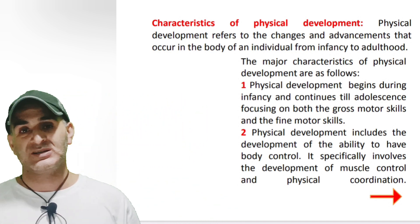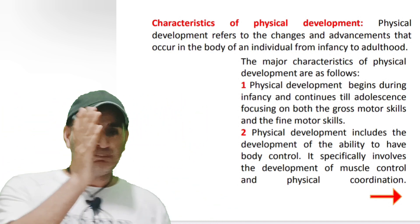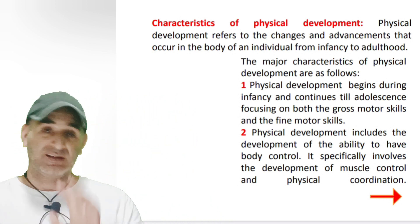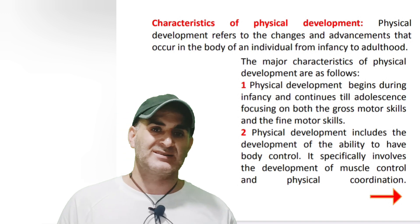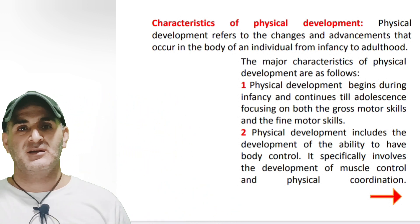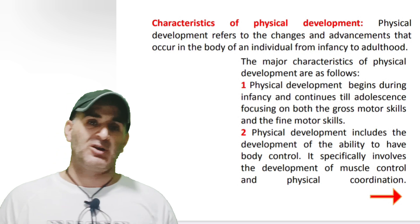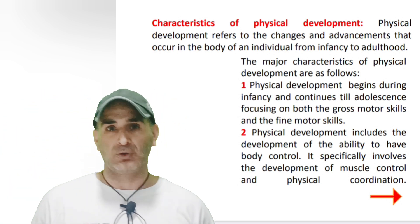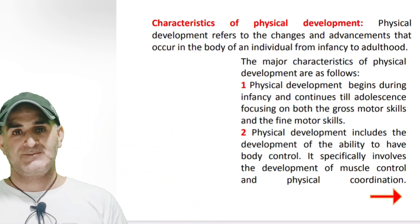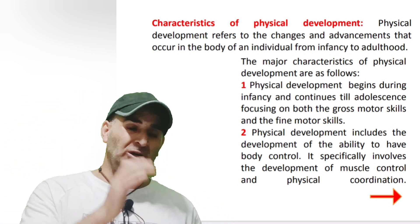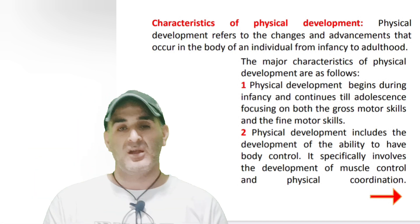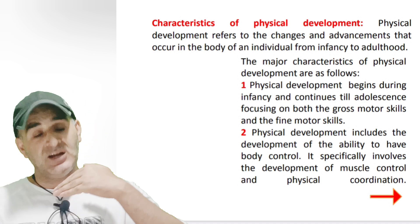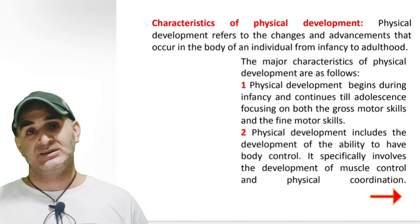After infancy, the second stage is childhood. The third stage is adolescence. After adolescence, the fourth stage is adulthood. And after adulthood, the final stage is old age. After completing the old age period, the individual reaches the state of death.